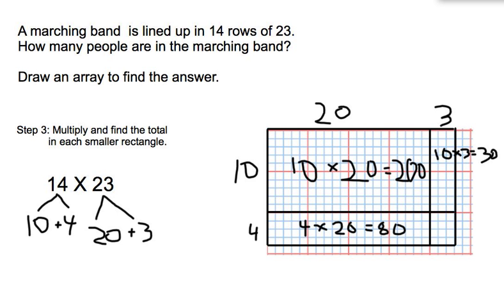Then we'll go over to this rectangle. And we're going to multiply 10 rows of 3, which equals 30. And finally, in this corner, you can see we have 4 rows of 3. So I'll multiply 4 times 3, which equals 12.